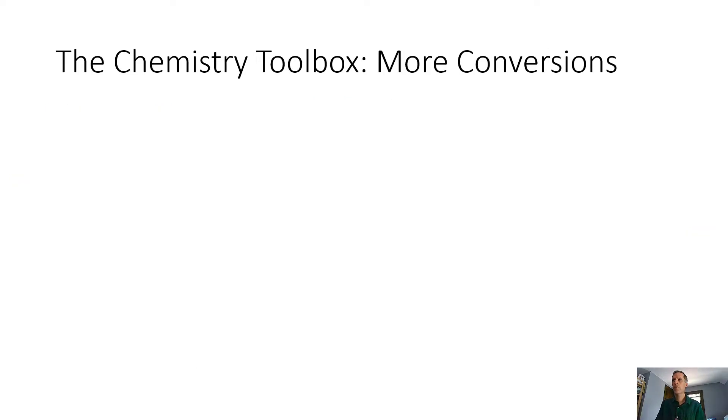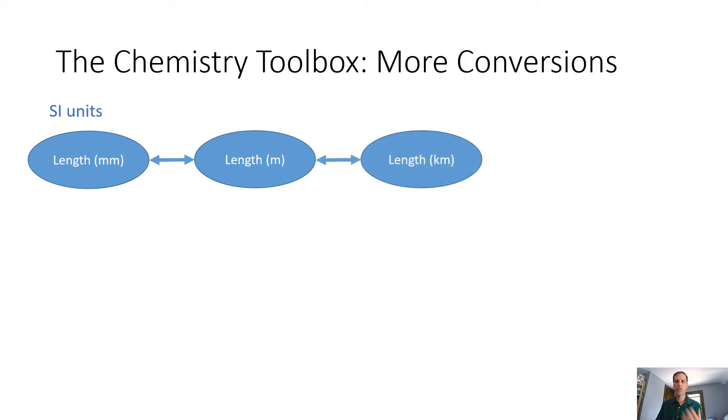When we think about our chemistry toolbox, we also have a variety of other conversions that we always have access to. One good example would be when we think about our SI units. We can convert between length in millimeters and meters or to kilometers or to any other sort of relationship that we might actually know. That also includes converting over to English units, like inches or feet.